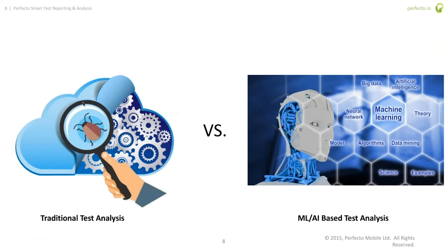Before I go into that, I want to talk about the machine learning components. With traditional test analysis, when a test fails you have to go look at that specific test — check the logs, look at HTTP requests, review screenshots, piece together a story of what failed, and reproduce it manually. What we're talking about now is a lot more machine learning, using capabilities similar to what Google has, to give a broader understanding of what happened with the test so you can go in and fix it.